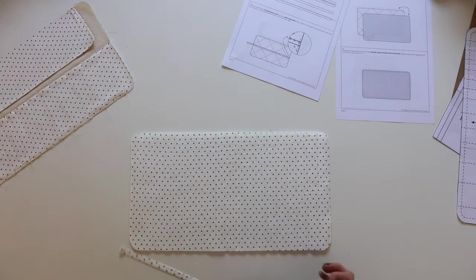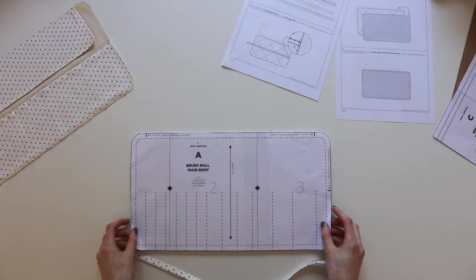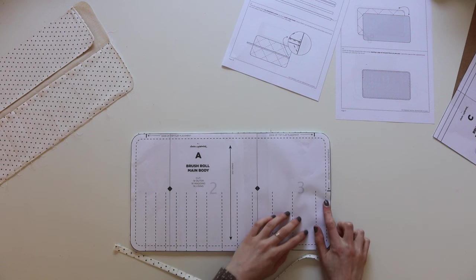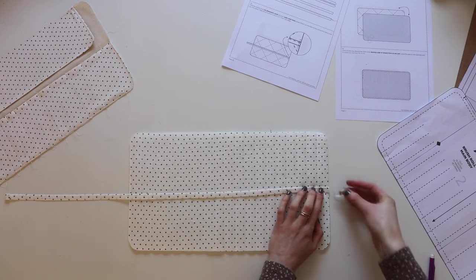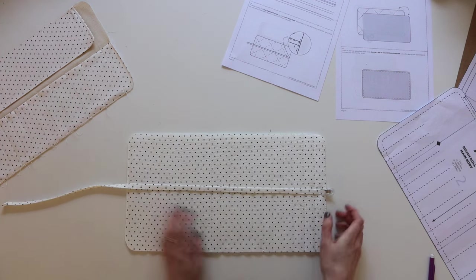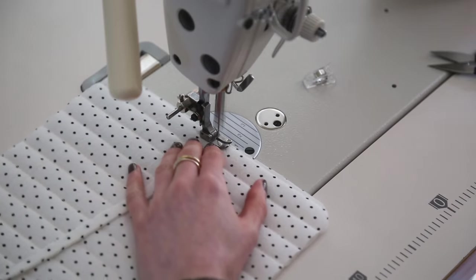Then we're going to grab the quilted main body piece, put the pattern back on top and take note of where that right hand notch is and that's where we're going to put the tie. So just pin the raw edge end of the tie at the side and then we're going to go and stitch that down.